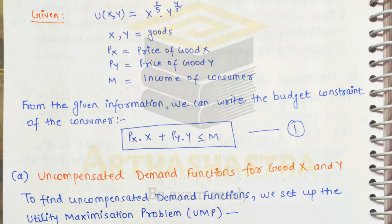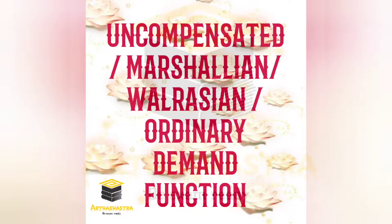m is the income of the consumer. From this given information we can write the budget constraint of the consumer, which is px times x — the expenditure of the consumer on consumption of good x — plus py times y — the expenditure on consumption of good y — less than or equal to m, his total income. In the first part we are asked to find the uncompensated demand functions for good x and y, also known as Walrasian demand functions, Marshallian demand functions, or ordinary demand functions.